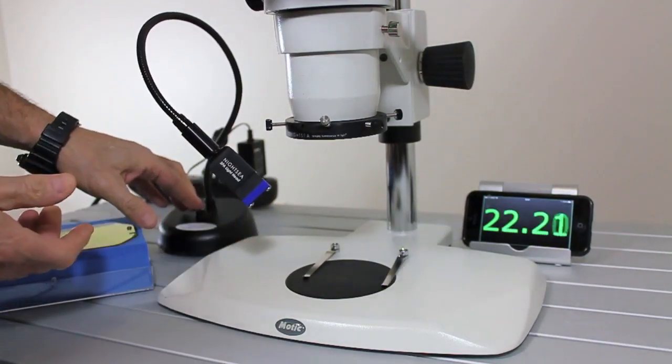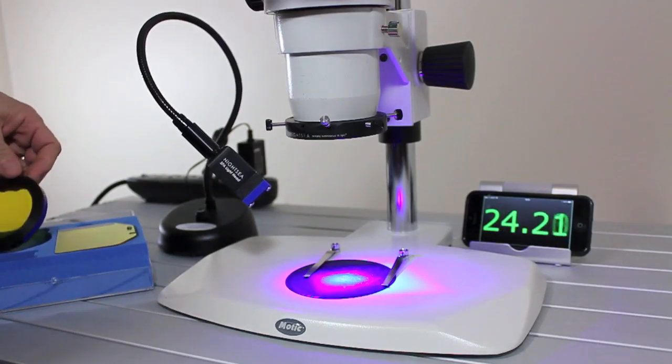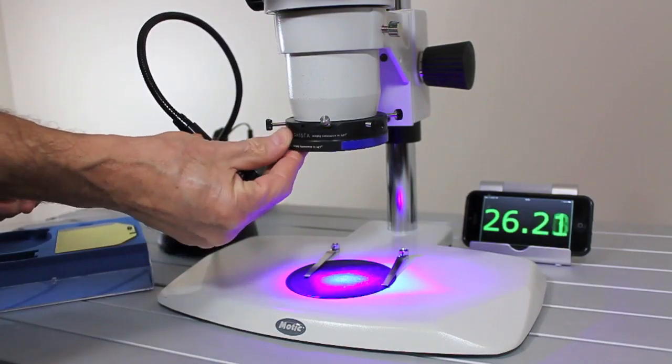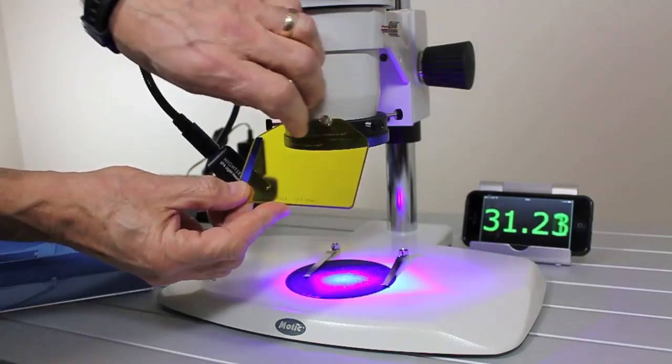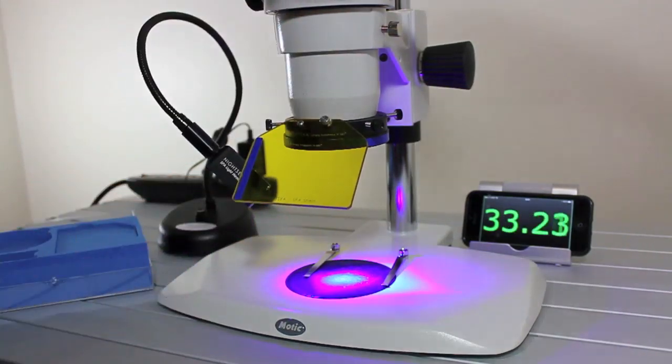Insert the light head, barrier filter clips on magnetically, shield slips in, tightens down, and we're done.